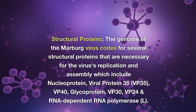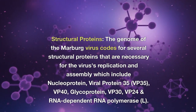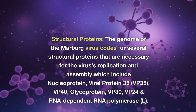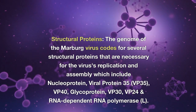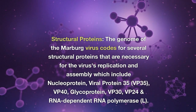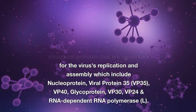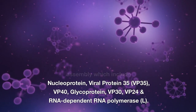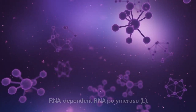The genome of the Marburg virus codes for several structural proteins necessary for the virus's replication and assembly, which include nucleoprotein, viral protein 35 (VP35), VP40, glycoprotein, VP30, VP24, and RNA-dependent RNA polymerase L.